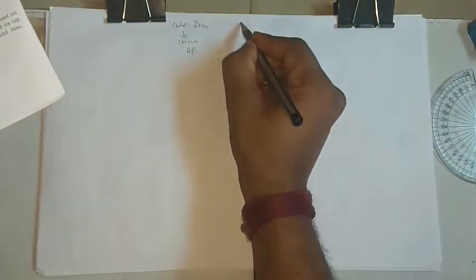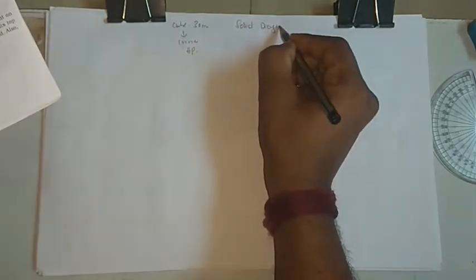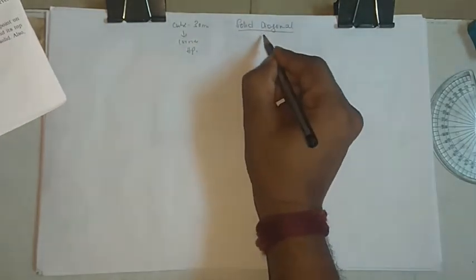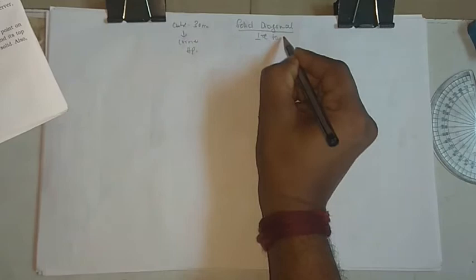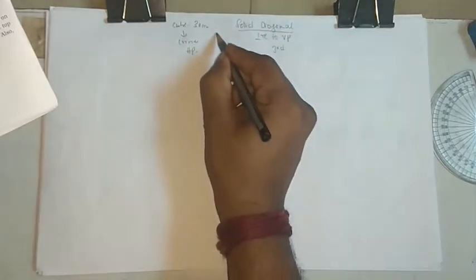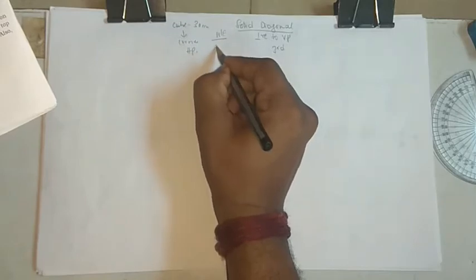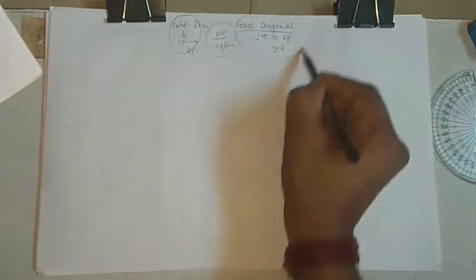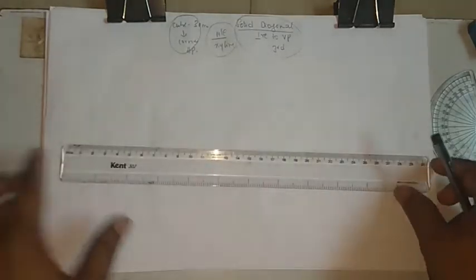Instead of an inclination angle, they have specified a solid diagonal condition. The solid diagonal is perpendicular to VP. This is the third condition, so the second position should make it parallel to the XY line. So we have the first, second, and third positions to consider.